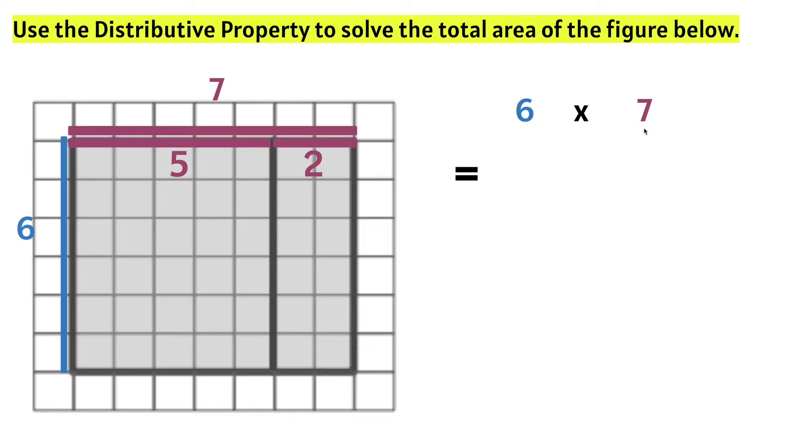So we can rewrite six times seven by rewriting the seven as five units plus two units. And we can go ahead and bring down the six. We notice that this six is still here. We figured out the length was six. And we notice that this length here has to be six as well. So we have the six from here times five plus two, which makes seven. So these two equations have the same exact value.